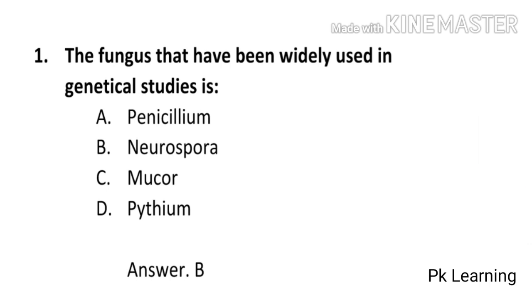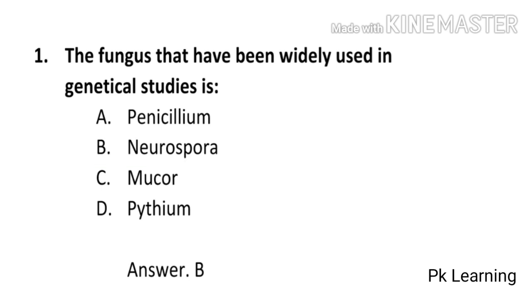First question: The fungus that has been widely used in genetical studies is — (a) Penicillium, (b) Neurospora, (c) Mucor, (d) Pythium. The answer is (b) Neurospora. Neurospora fungus is most widely used in genetical studies.